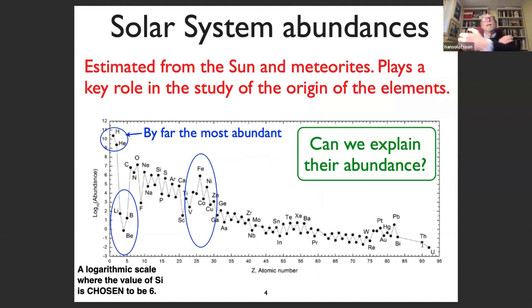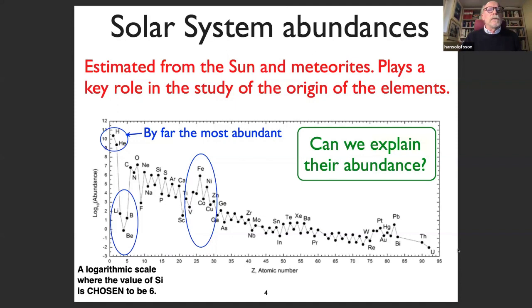Can we do even better than just explain how the elements are formed? This is captured in this figure, where we see the abundances of the elements in the solar system, starting with the lightest element on the left — hydrogen — and going all the way up to uranium. The abundance is given on a logarithmic scale where the value for silicon has been chosen to be six, and all other elements are relative to that. Can we also explain this curve?